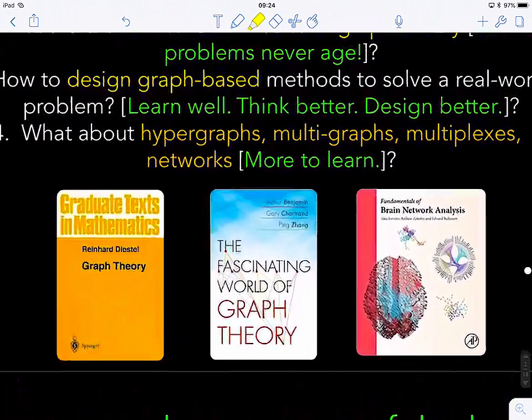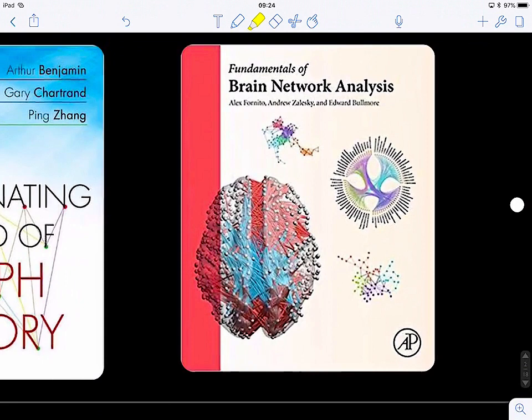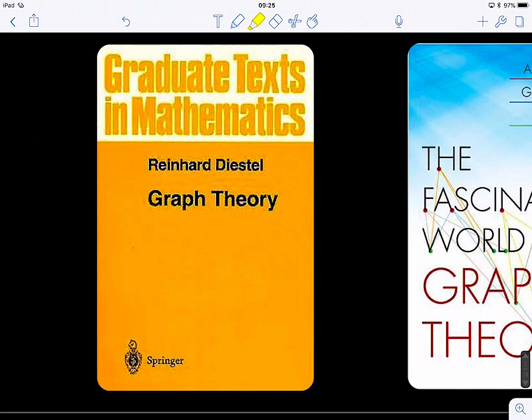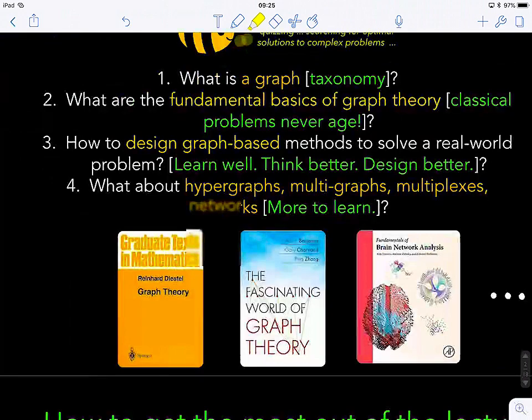The textbooks I'm using in this course are these three. We have the fundamentals of brain network analysis. This is really a great book about graph theory, but it presents all graph theory, covers the main topics with application to the brain. The theory is there, the algorithms are there, the math is there, learning everything is there. There's another one called The Fascinating World of Graph Theory by Benjamin Chartrand. And the last one is Graduate Texts in Mathematics published by Springer, graph theory. You have three textbooks, but to not get lost, I would say focus on the first one.